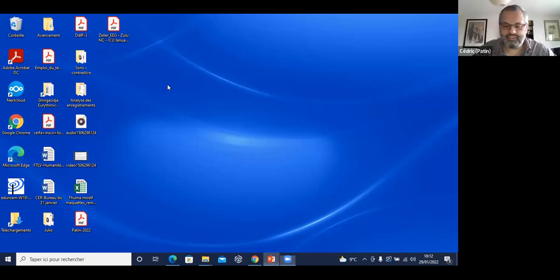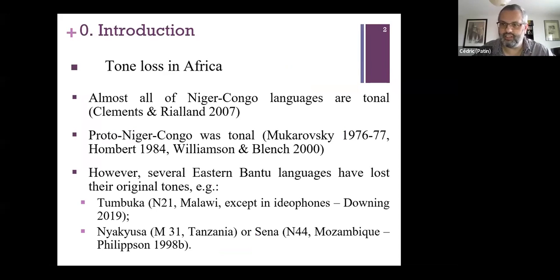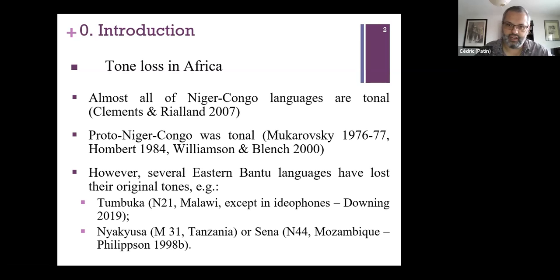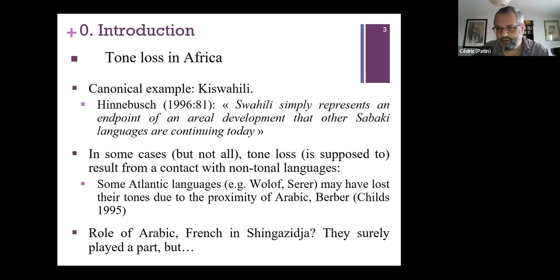Thank you to the team for inviting me to participate in this online colloquium. I will discuss in this talk the notion of tone loss. Almost all Niger-Congo languages are tonal, and proto-Niger-Congo was tonal, but many languages have lost their tones — particularly in the eastern or northern part of the phylum. The most known example is Kiswahili. In some cases, contact with non-tonal languages — like Arabic or French — was involved in tone loss.